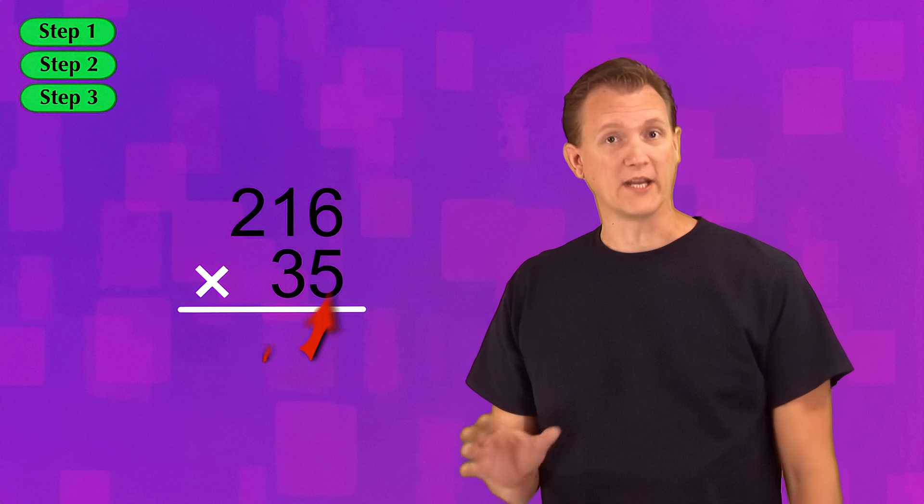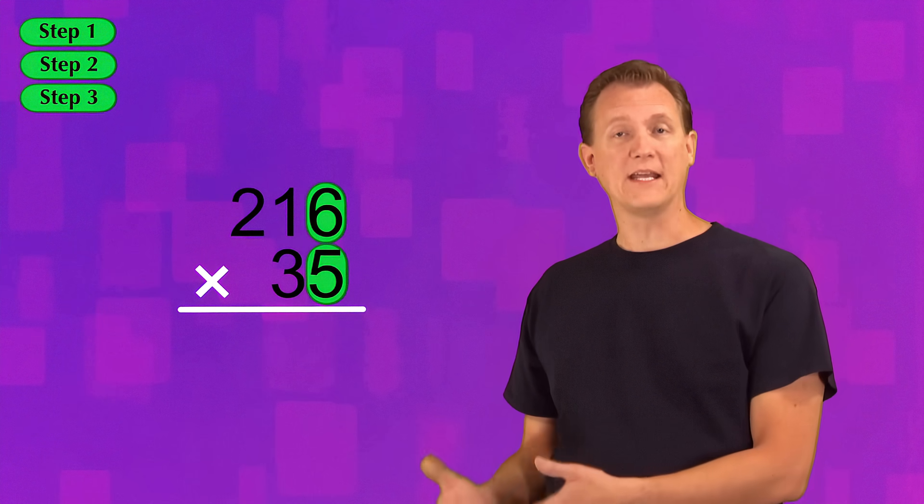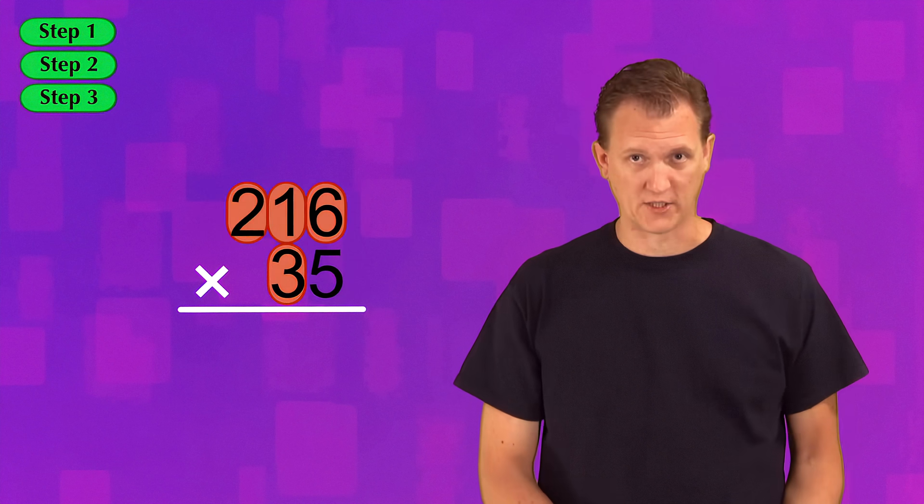Well, when the bottom number of your multiplication problem also has more than one digit, you have to do that same procedure we learned for each bottom digit. For example, if you have a two-digit bottom number, you multiply the first digit by each top digit, and then you multiply the second digit by each top digit. That means you're going to have twice as many steps to do, and it means you're going to get two different answers.